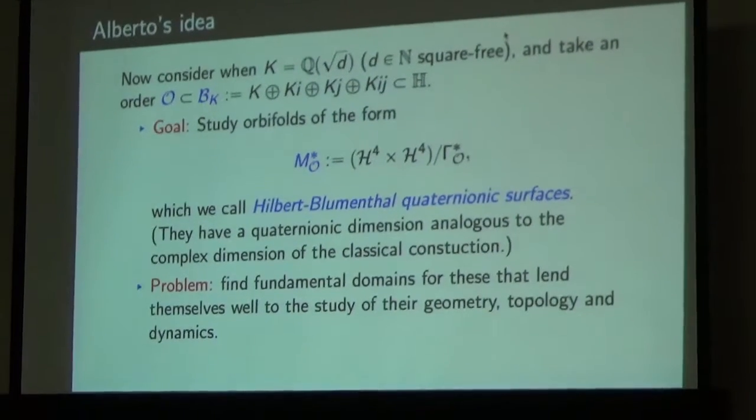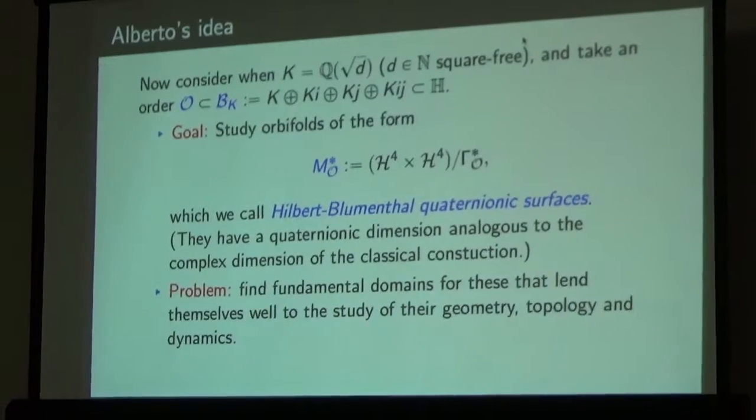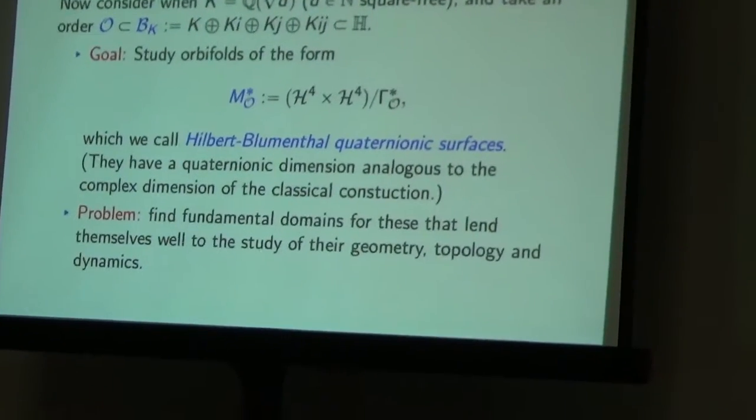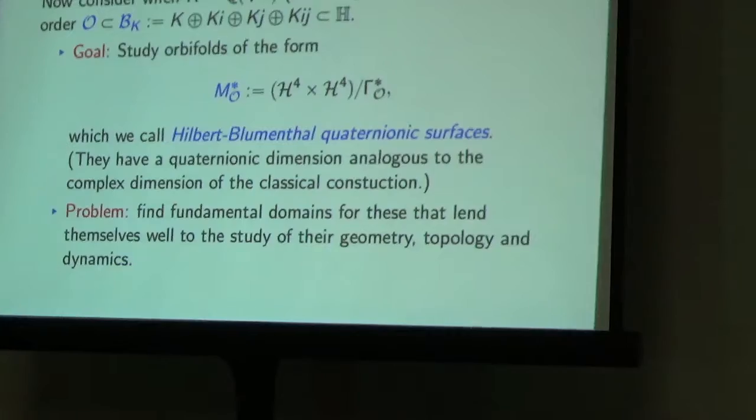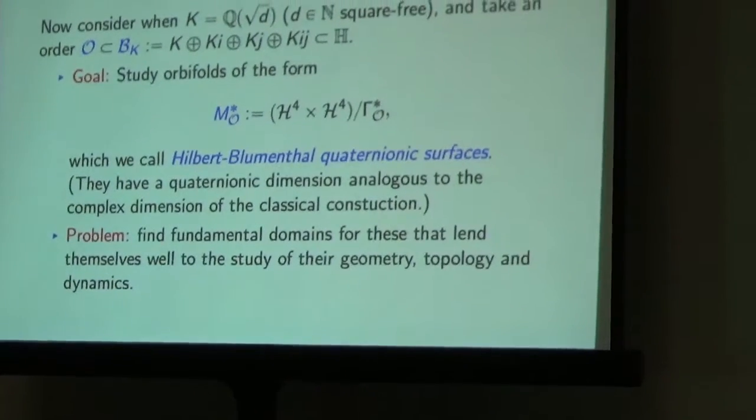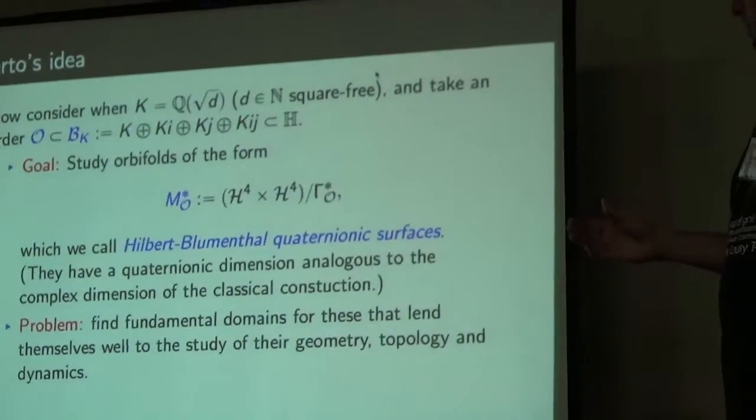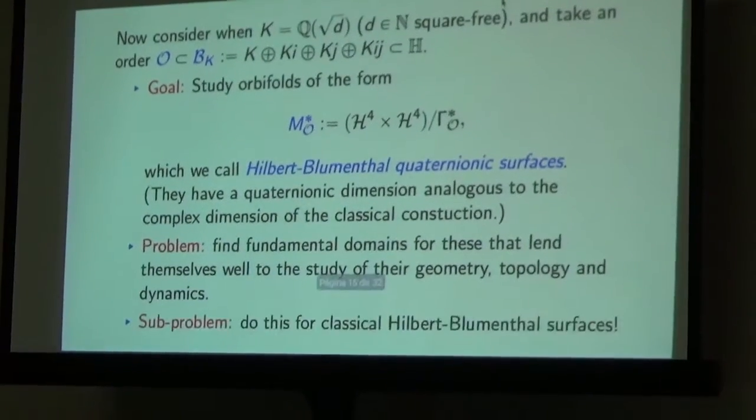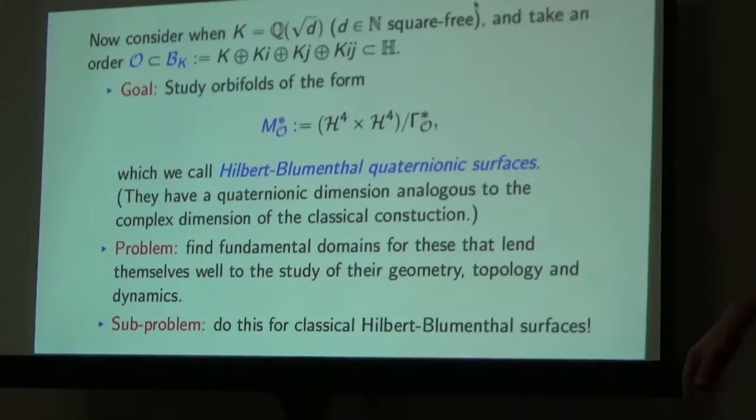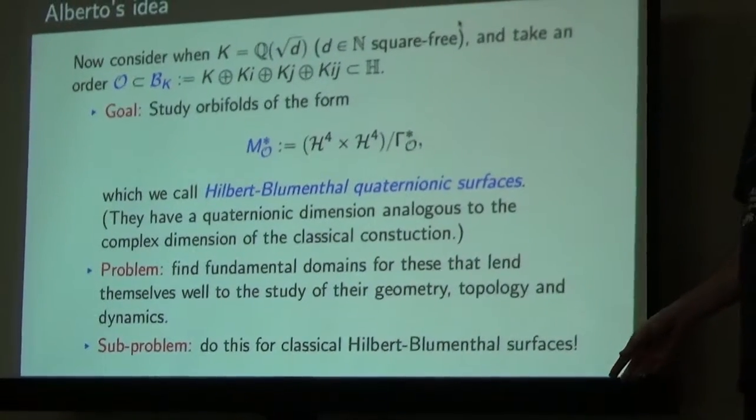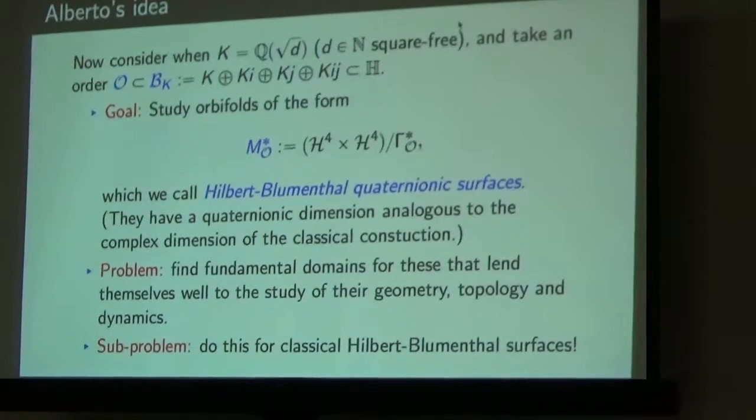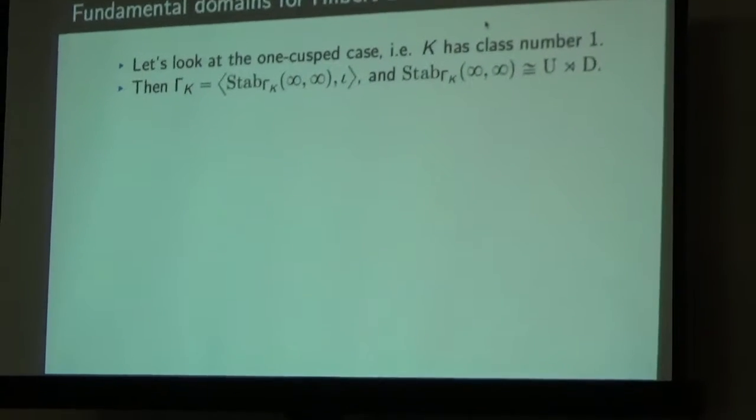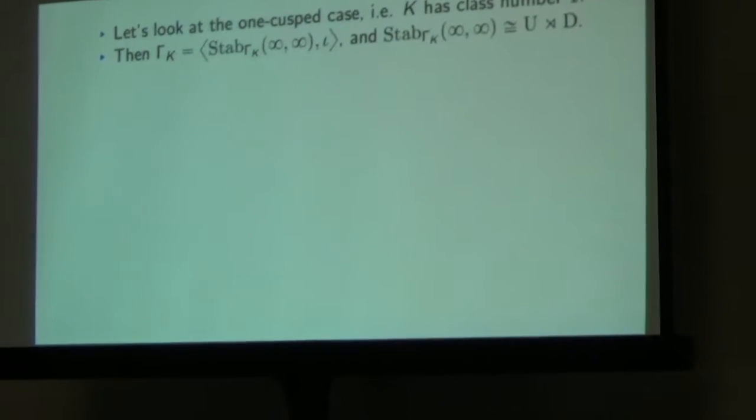I don't call them quaternionic Hilbert-Blumenthal surfaces because somebody already used that term to mean a quaternionic way of making regular Hilbert-Blumenthal surfaces. So this is just a choice of what to call it. We're also looking at the five-dimensional version. But this one is nice because it really has a sense of a quaternionic dimension, like two-dimensional over the quaternions, eight real dimensions. What we want to do is find a fundamental domain for these types of orbifolds that allows us to study their geometry, topology, and dynamical systems on the things. The natural thing to do is just go back, look at everything that was done in the classical setting, and try to generalize it.